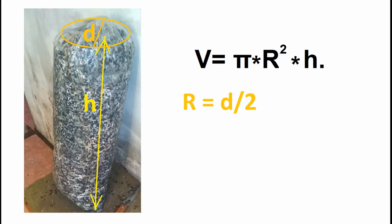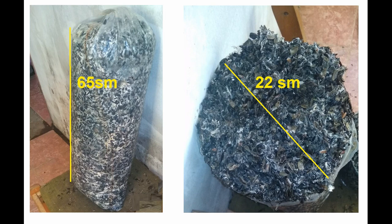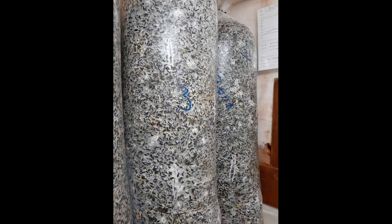The bag also has a volume that can be measured in liters. To find this volume, you can use the online calculator or the formula that you see on the screen. For example, let's take a block height of 65 cm and a diameter of 22 cm. The volume of such a block in liters will be 25. It is quite difficult to manually compact the substrate, especially straw, up to 0.5 kg. Therefore, we take the figure 0.4 kg multiplied by 25 liters. The weight is 10 kg.